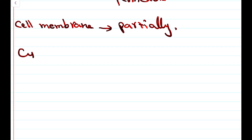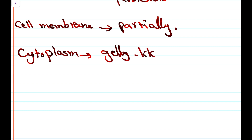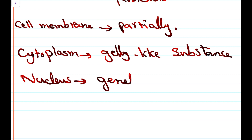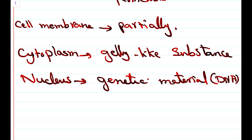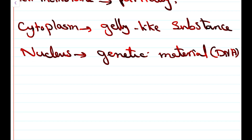The second organelle is cytoplasm — a jelly-like substance. Inside the cytoplasm, all chemical reactions take place, and it carries all the organelles. Next is the nucleus, which carries the genetic material — the DNA. It carries the genes. The function of the nucleus is to control cell activities, control cell division, and be responsible for the cell's features, because it contains the genetic material, the DNA.